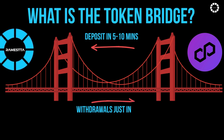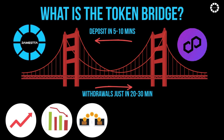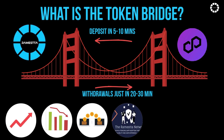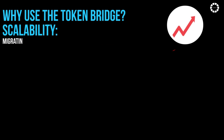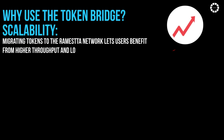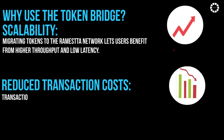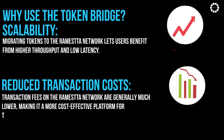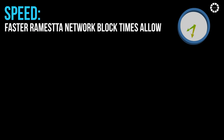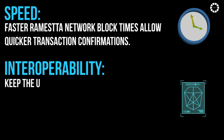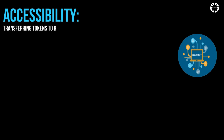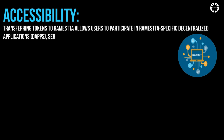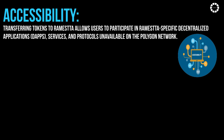By using this bridge, users can enjoy the benefits of scalability, low fees, and fast transactions offered by the Romesta network, while remaining connected to the broader Polygon ecosystem. Benefits include: Scalability — migrating tokens to Romesta lets users benefit from higher throughput and low latency; Reduced transaction costs — fees on Romesta are generally much lower, making it more cost-effective for trading and yield farming; Speed — faster Romesta block times allow quicker transaction confirmations; Interoperability — keeping the utility of tokens across different blockchain layers; and Accessibility — transferring tokens to Romesta allows users to participate in Romesta-specific dApps, services, and protocols unavailable on Polygon.